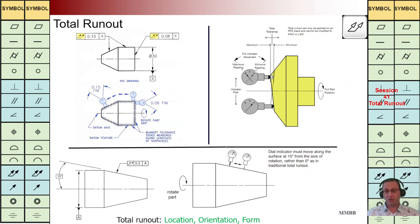At top right, I would like to highlight that whenever we implement total run out for a flat surface, we are going to control the perpendicularity of that flat surface with respect to the datum axis, as highlighted here.